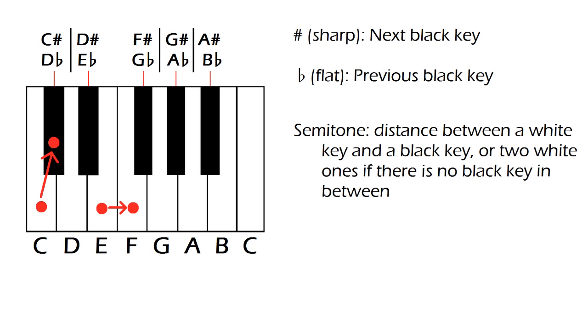A semitone, also known as a half step, is the distance between a white key and a black key, or two white ones if there is no black key in between.